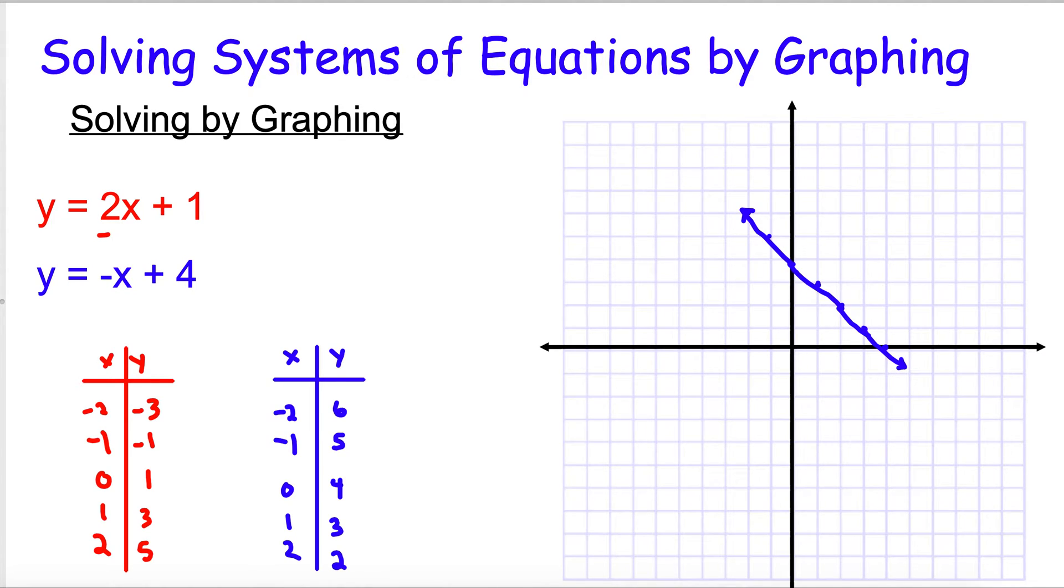All right, so then let's graph the red one. We're going to graph negative 2, negative 3. Negative 1, negative 1. 0, 1. 1, 3, and 2, 5. So if I connect these dots, we've got our line. And right there is our intersection point. You can kind of see that in our table. We've got 1, 3 here. And we have 1, 3 here as well. So what's our intersection? It's 1, 3.